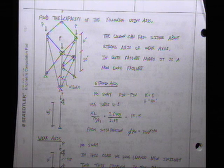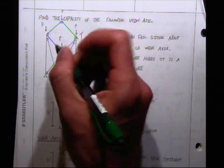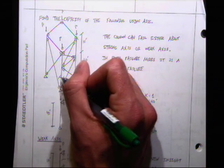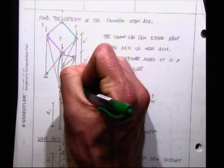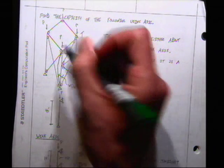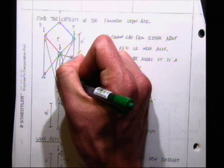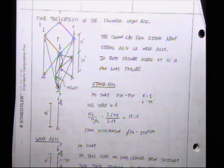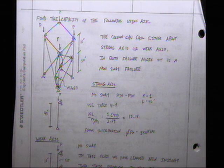You have to check every column and see if it can buckle about its strong axis or about its weak axis. This column could buckle in this direction about its weak axis, the yy axis, or it could buckle about the strong axis in that direction. We have to check both of them, and how do we know? We have to look at KL over r.